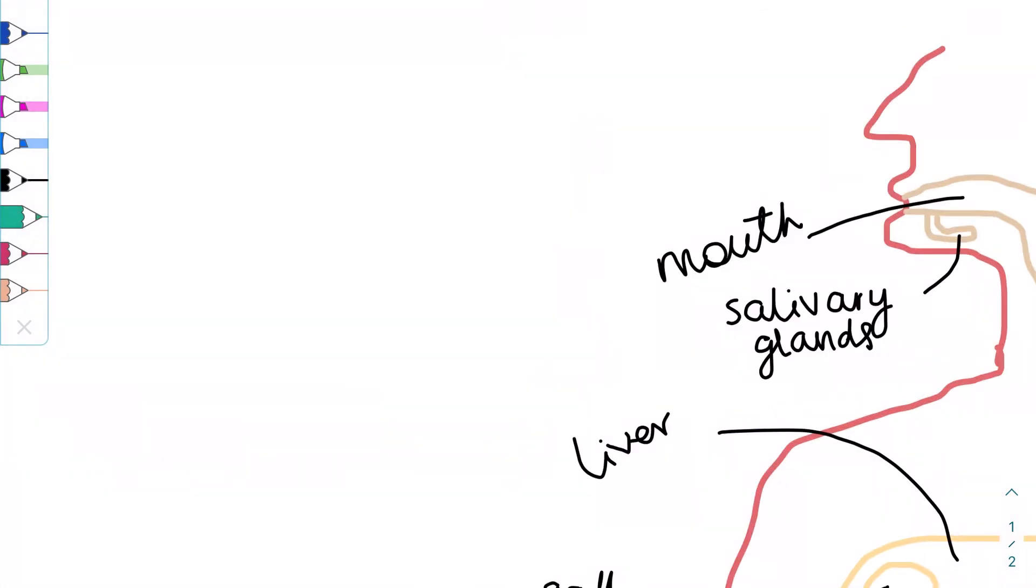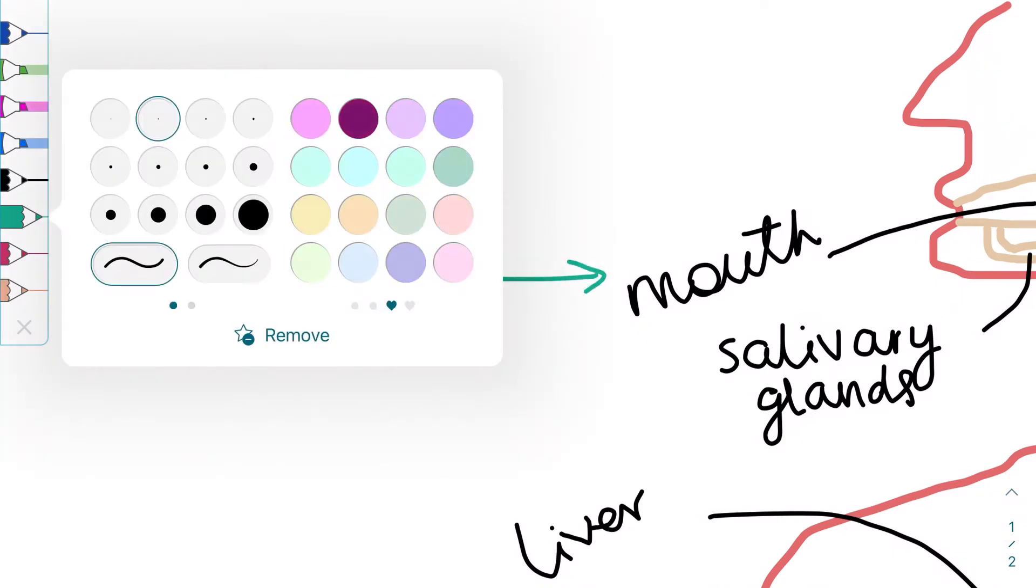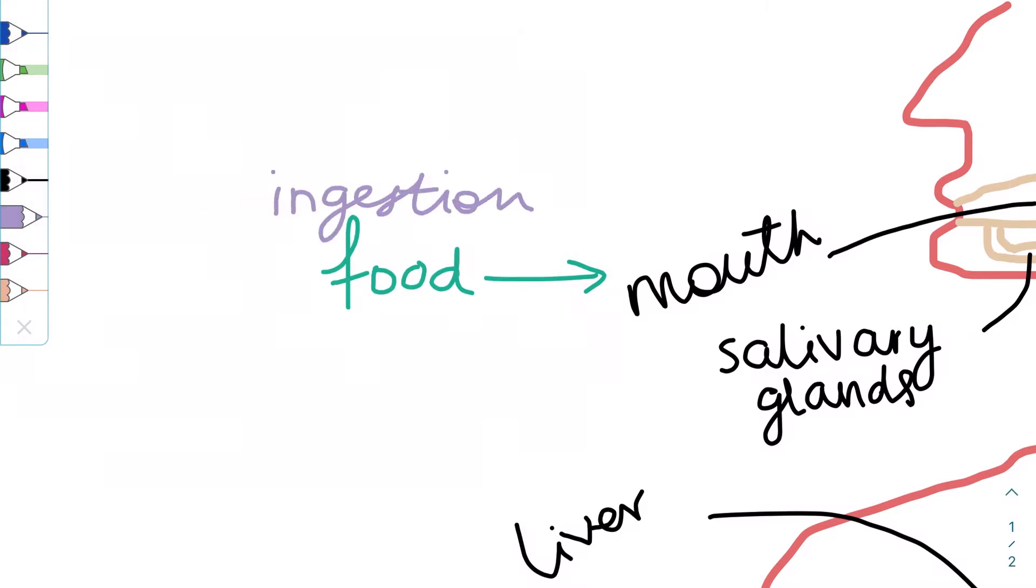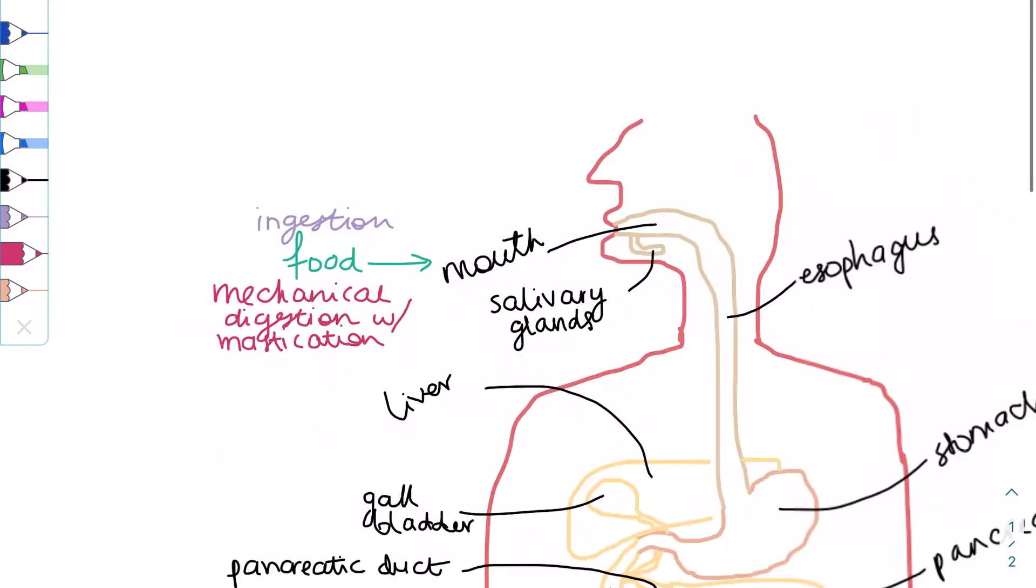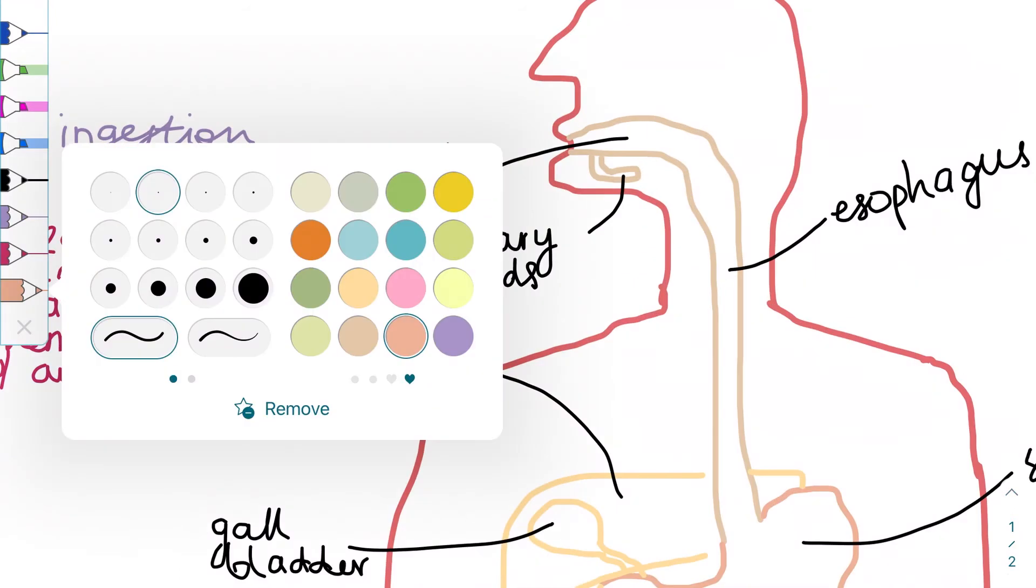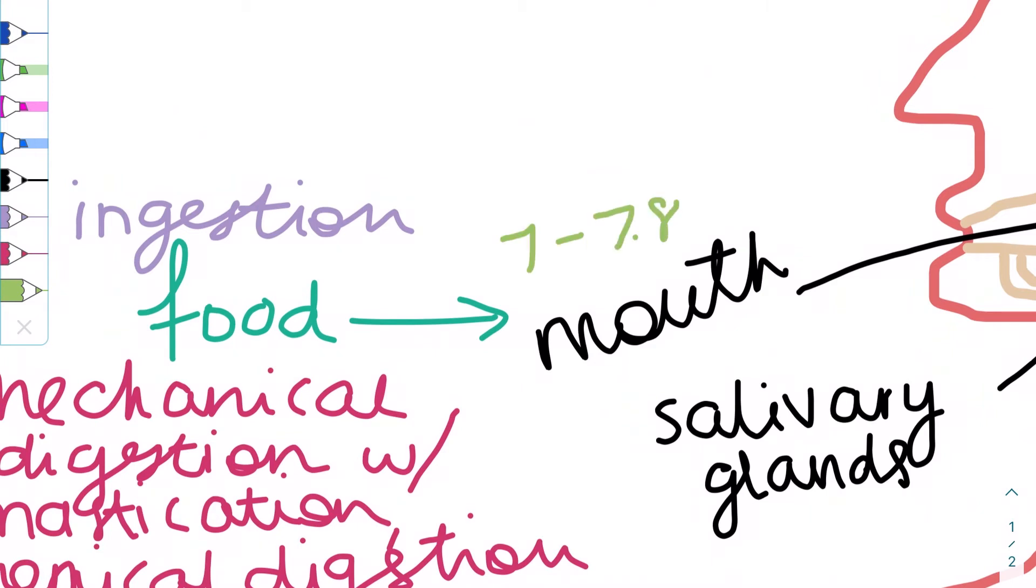Let's begin with ingestion. Food is placed in the mouth and is chewed, which is called mastication. This mechanically breaks apart the food into smaller pieces. Amylase is also secreted by the salivary glands, which begin the hydrolysis or breakdown of starch. The pH, which I will represent in green, is slightly basic.